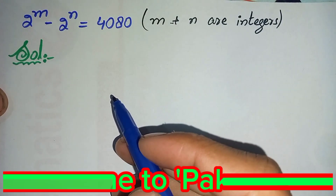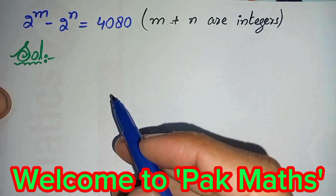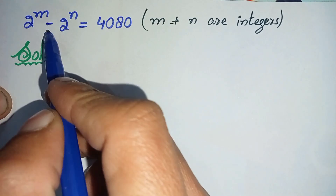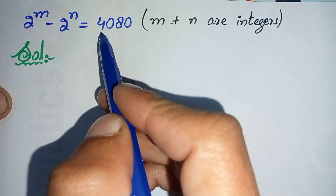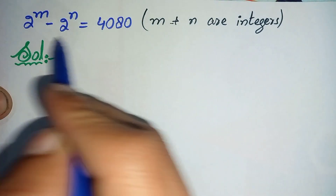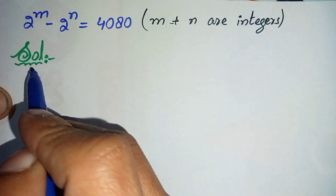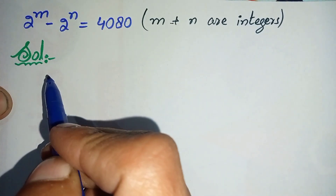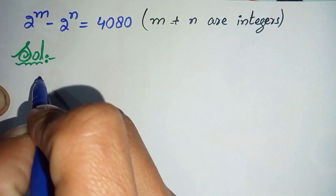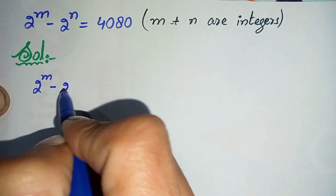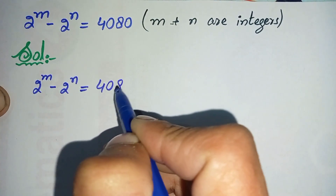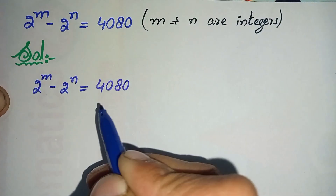Hello everyone, welcome to Park Maths. In this video I'm going to solve this interesting exponential math problem: 2 raised to power m minus 2 raised to power n is equal to 4080, where m and n are integers. To solve this question properly and step by step, we will write out the solution. The question is 2 raised to power m minus 2 raised to power n equals 4080.